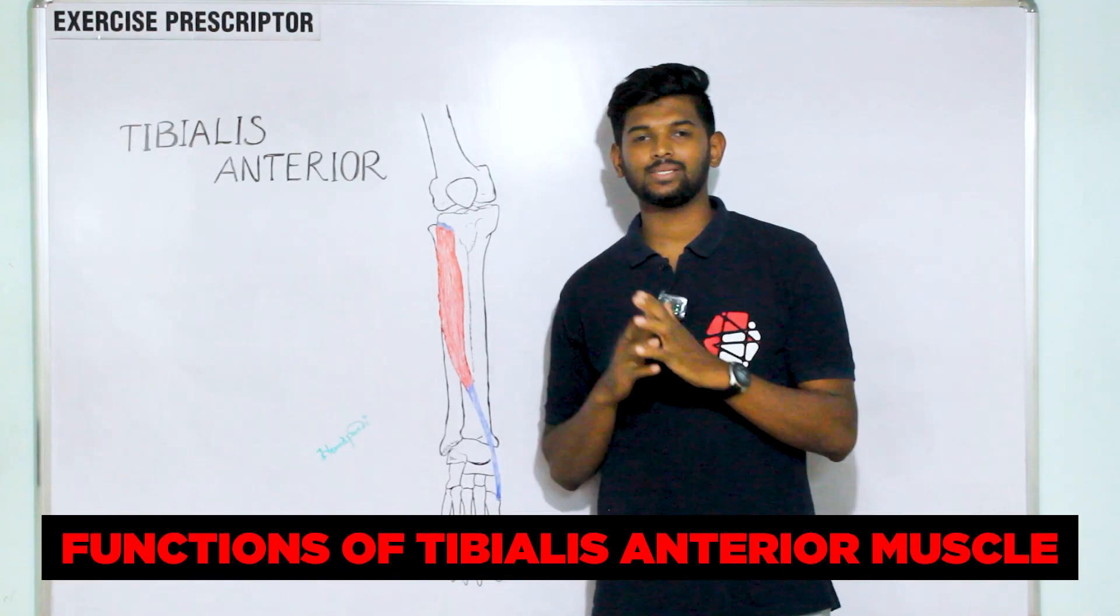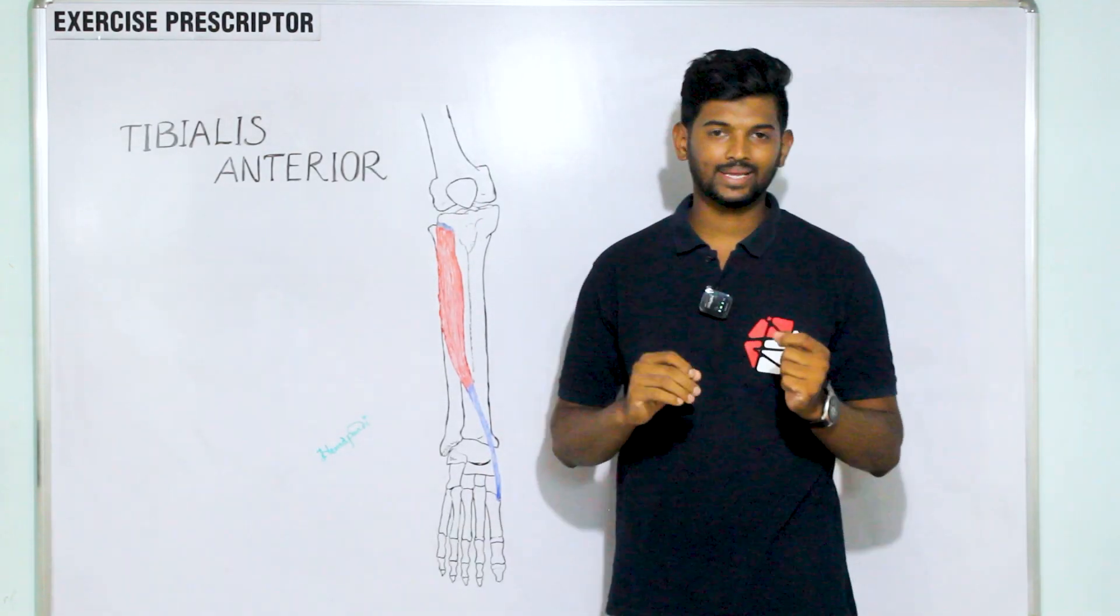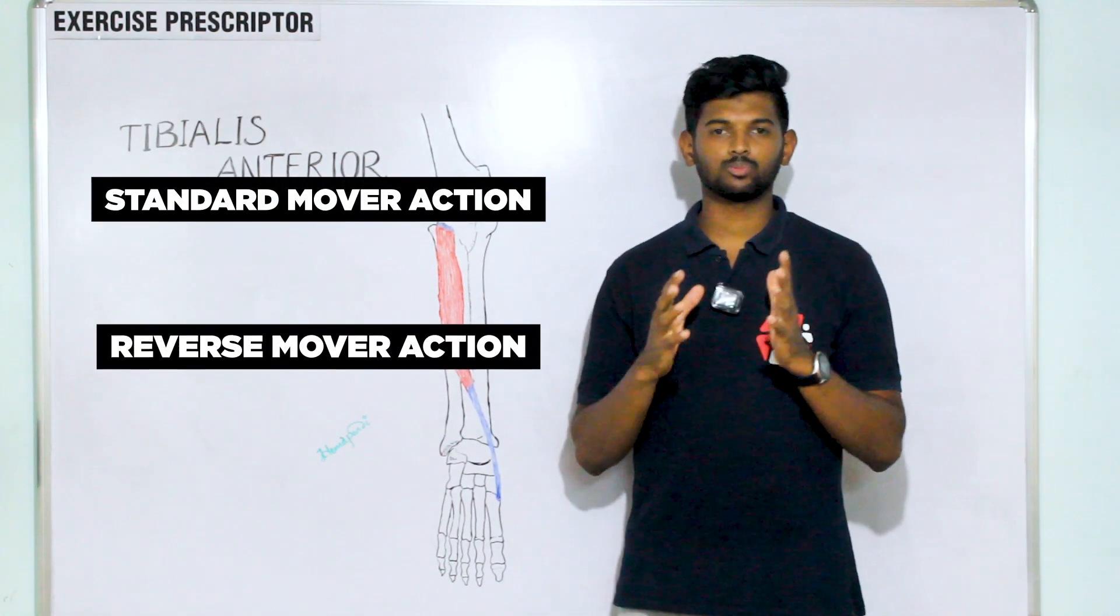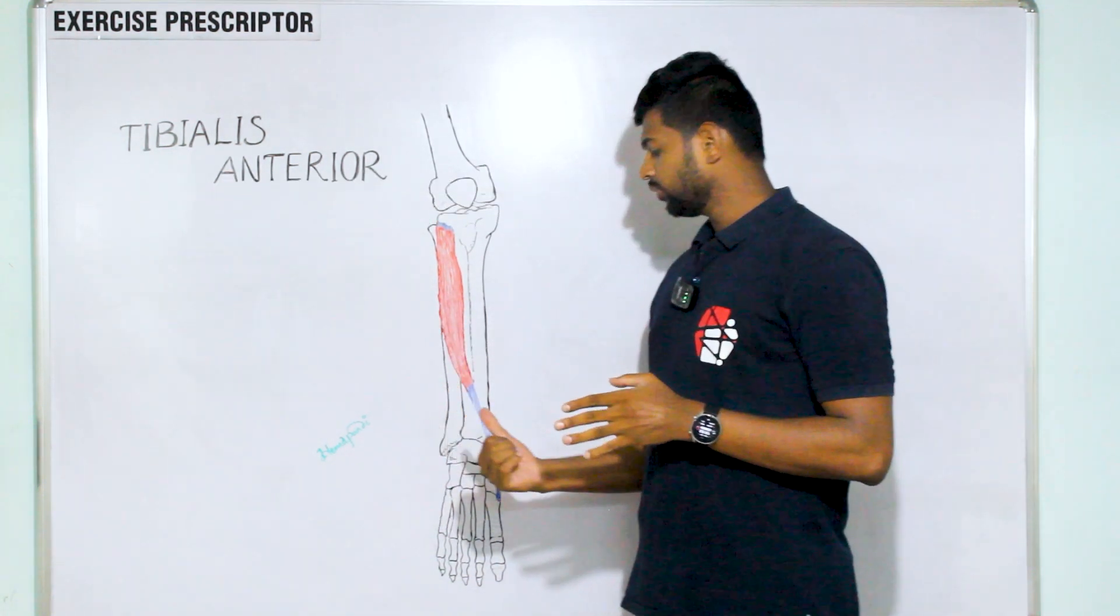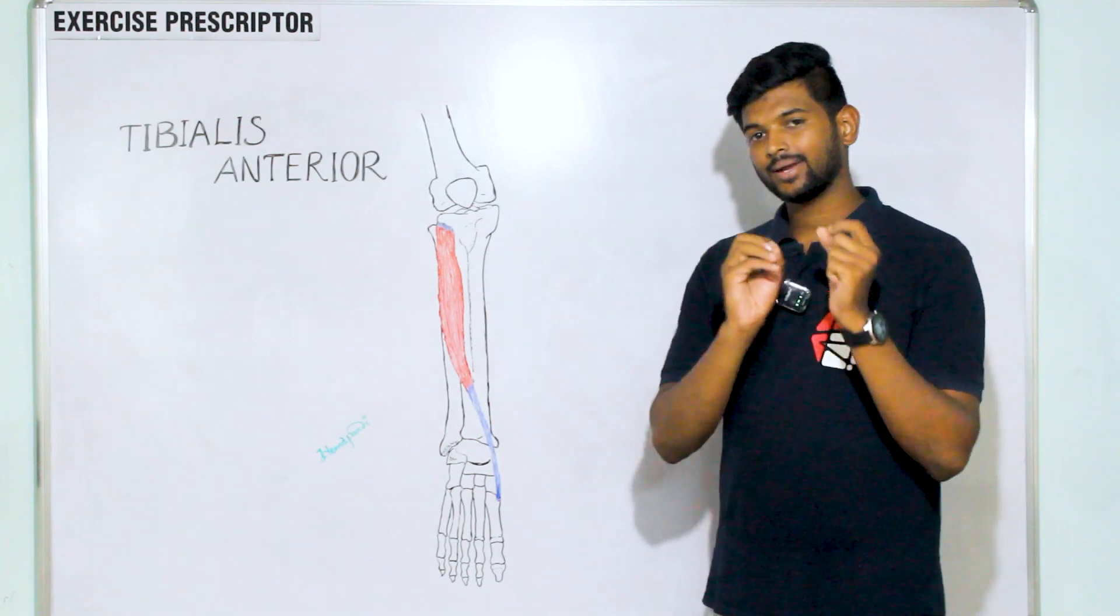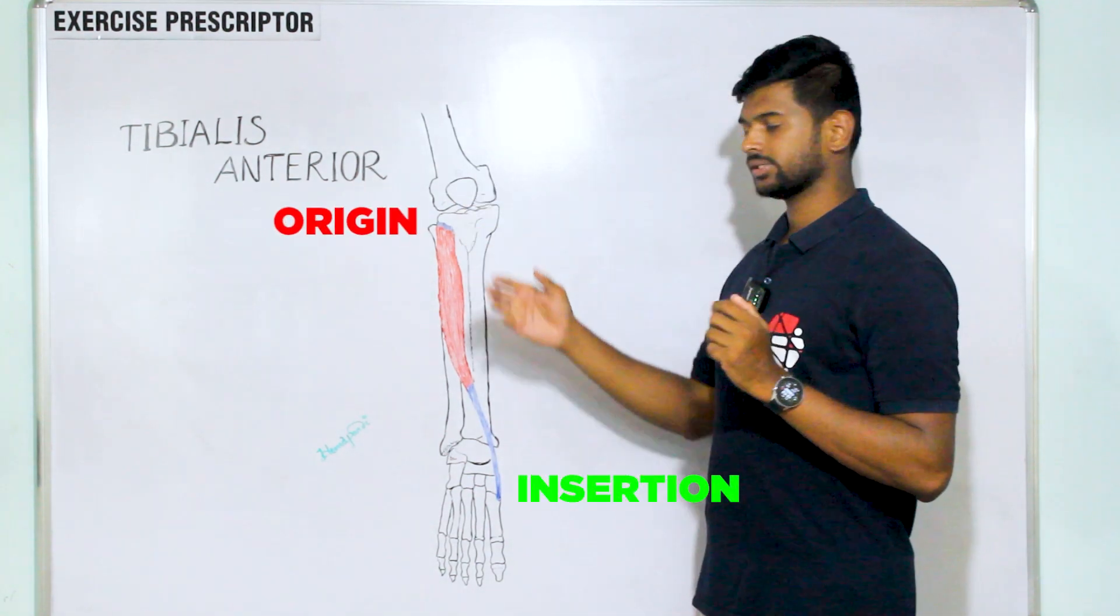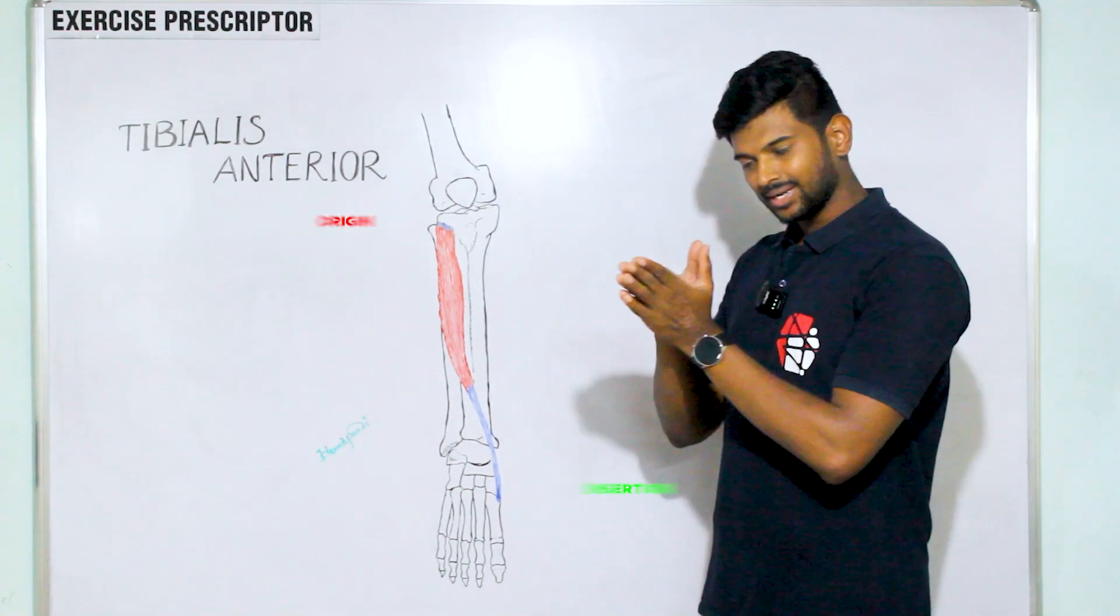Next we'll understand the functions of tibialis anterior function. I always categorize standard mover action and reverse mover action. Standard mover action is when the most mobile attachment, the insertion, moves towards the origin. That is called standard mover action.